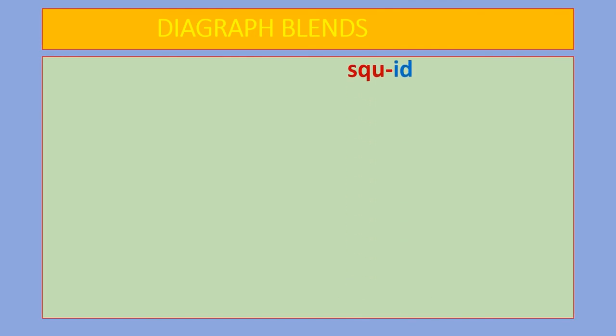We use these blends to form words. Like square, we can add ID to make squid. We add IMP to SHR, ISTMAS to CHR, and EAD to THR.